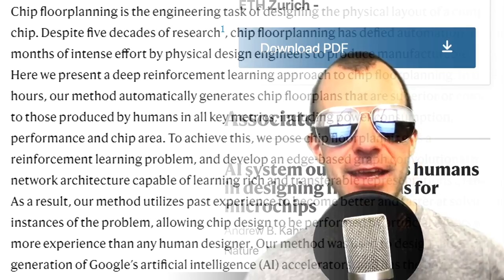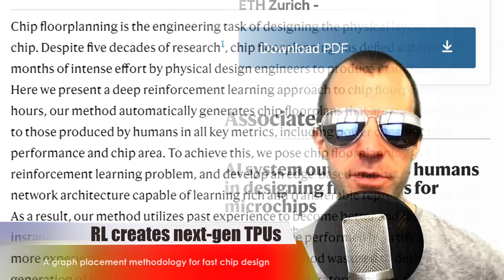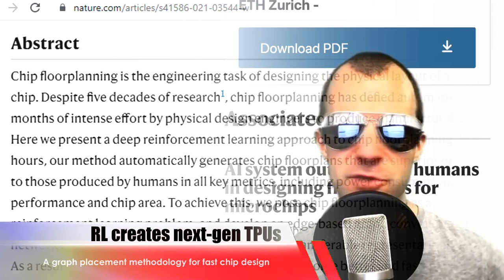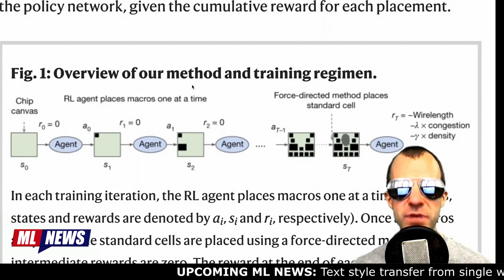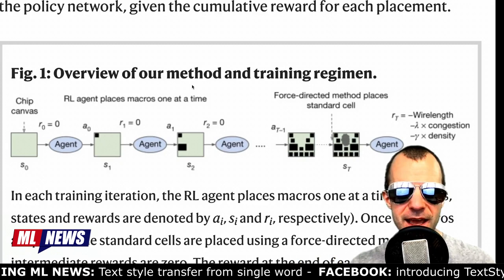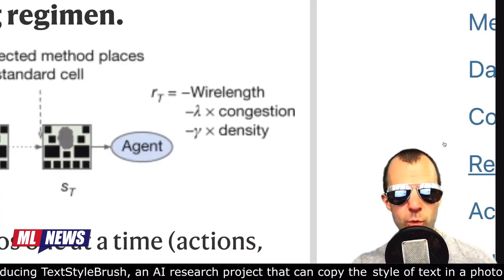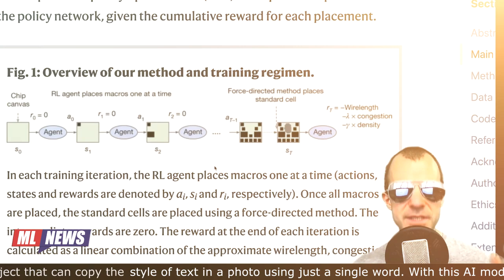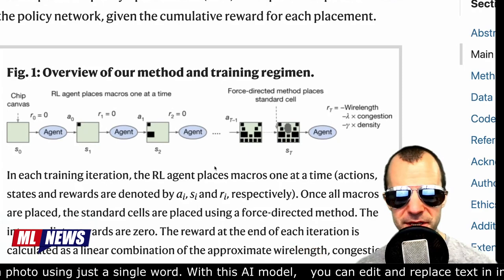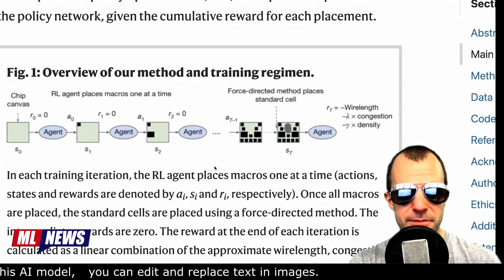Our first story: graph placement methodology for fast chip design by Google. This is a paper where researchers use reinforcement learning to design the next generation of chips, specifically TPU accelerators. The problem, often seen as a discrete optimization problem and therefore particularly hard, is framed as an RL problem where an agent looks at the available space and places individual parts of the chip, also connecting those parts according to some predefined scheme. The RL method is much faster and gives better results than human expertise coupled with discrete problem solvers.